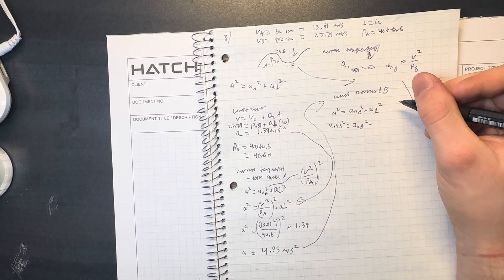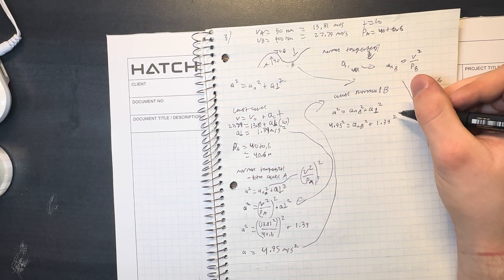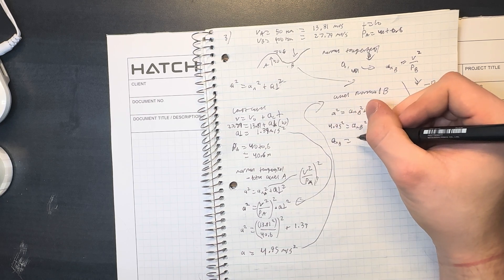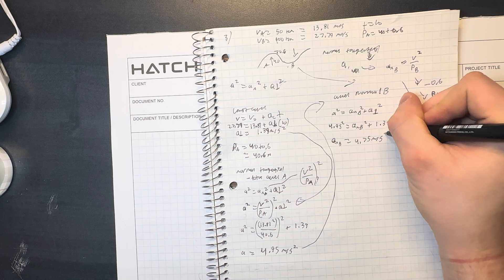Plus what was that again, 1.39 squared. So this gives us a_n_B equal to 4.75 meters per second squared.